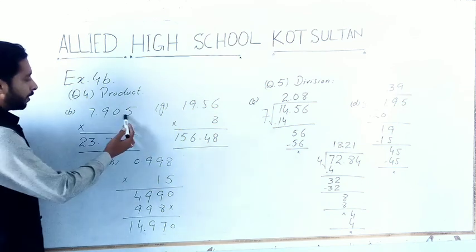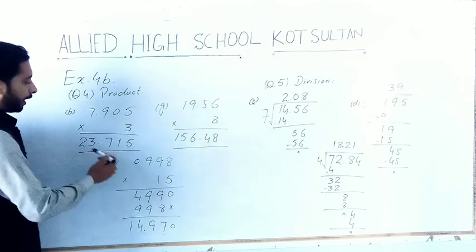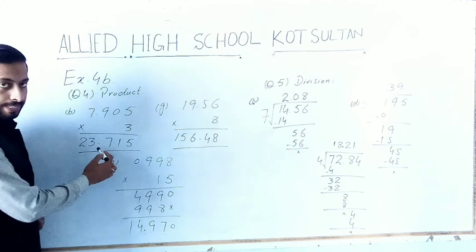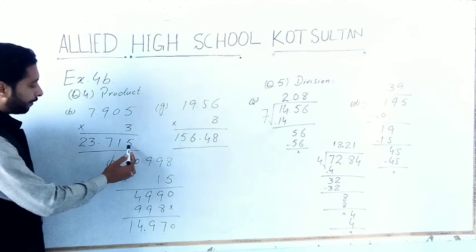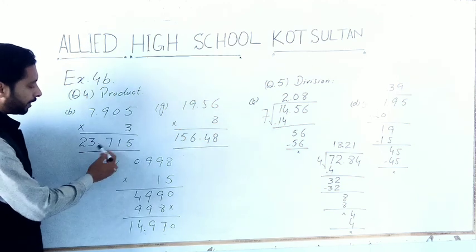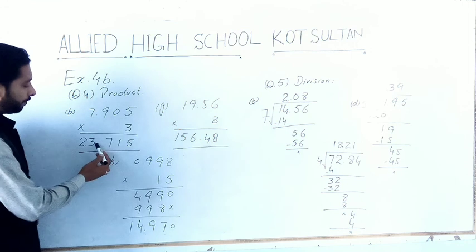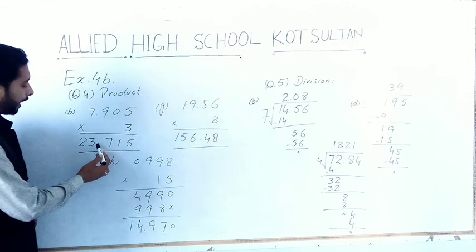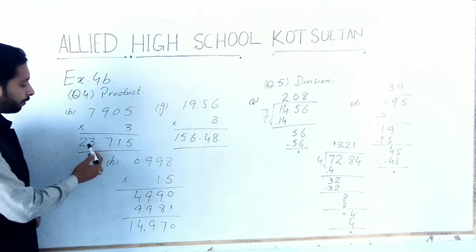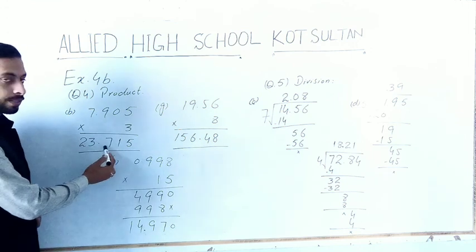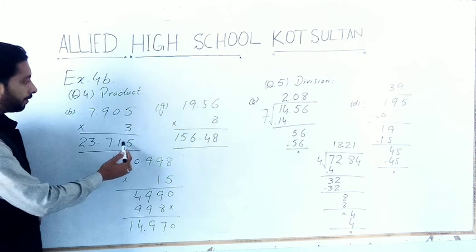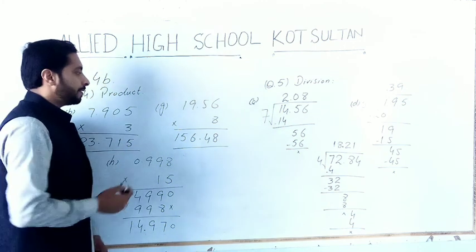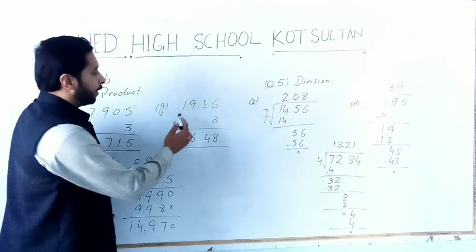So we have digits 1, 2, and 3 — we will place the decimal point after three digits: 5, 1, and 7. We place the decimal here and the answer will become 23.715. Part G is 19.56 multiplied by 8.